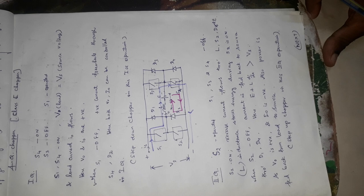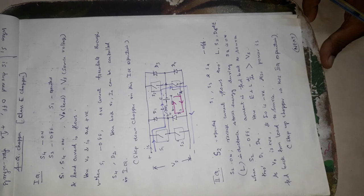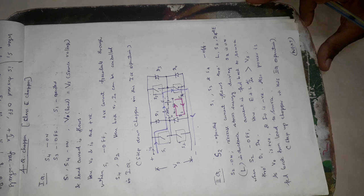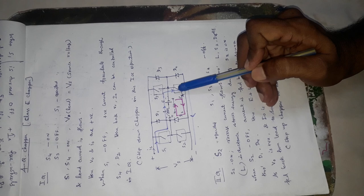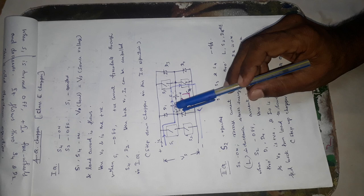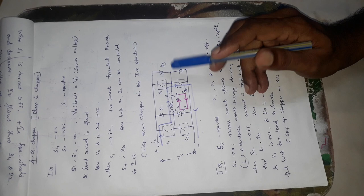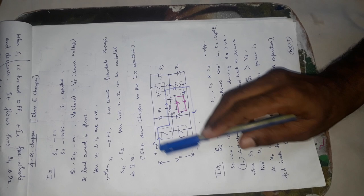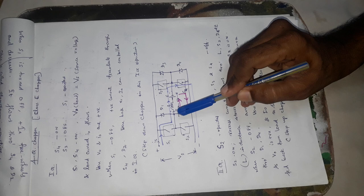We are going to see first the first quadrant operation, that is forward motoring mode. The diagram shows S1, S2, S3, S4 are the 4 choppers. And D1, D2, D3, D4 are 4 diodes. L and E are the motor parameters. Vs is the input supply. Is is the input current. And IO is the load current or output current. VO is the output voltage or load voltage.